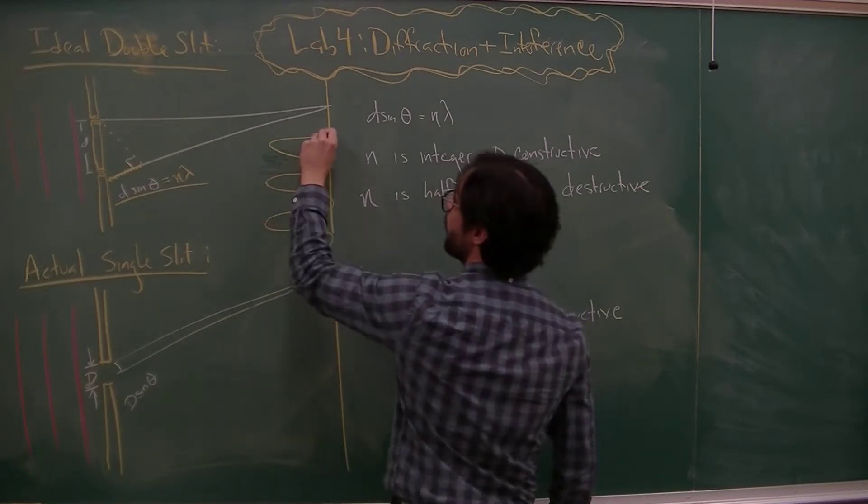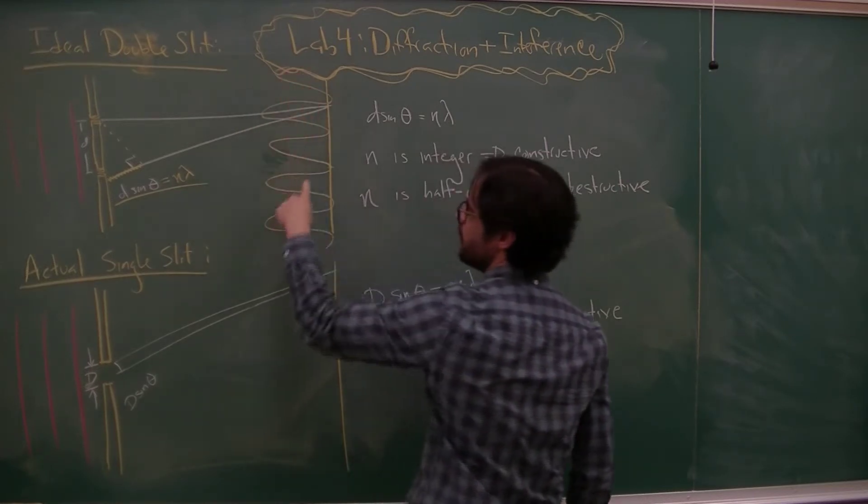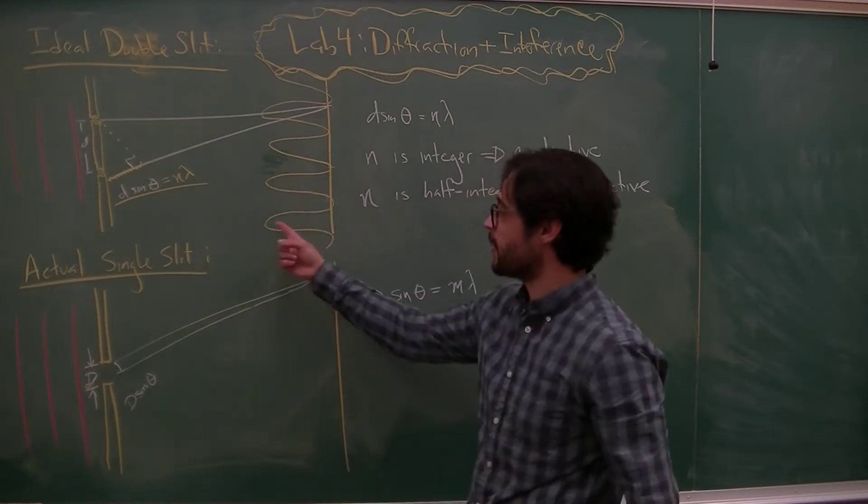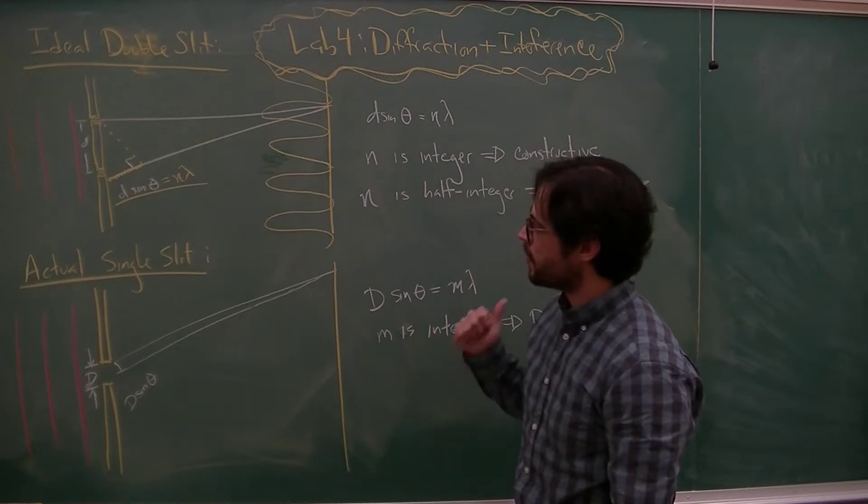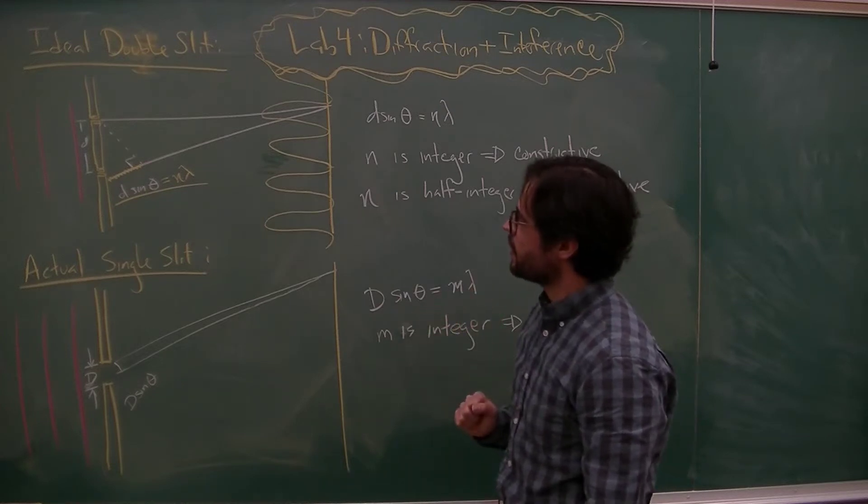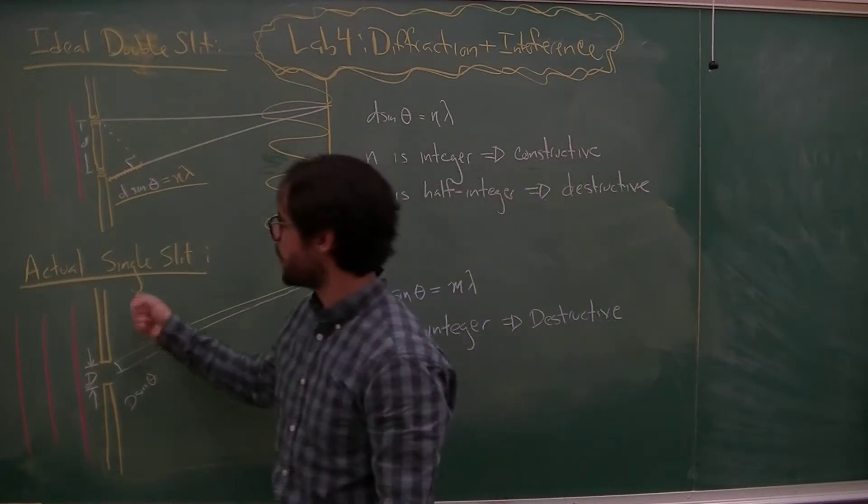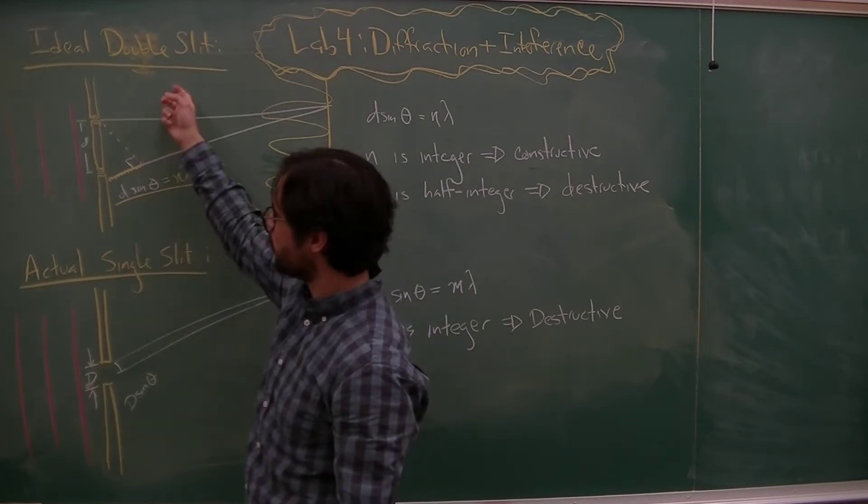And in an idealized version, I would see an intensity pattern that looks like this, alternating bright and dark fringes: bright, dark, bright, dark. So turns out that you're not going to see that. And to understand what you actually see in an actual double slit, not an ideal one, you need to talk about the phenomenon of diffraction.